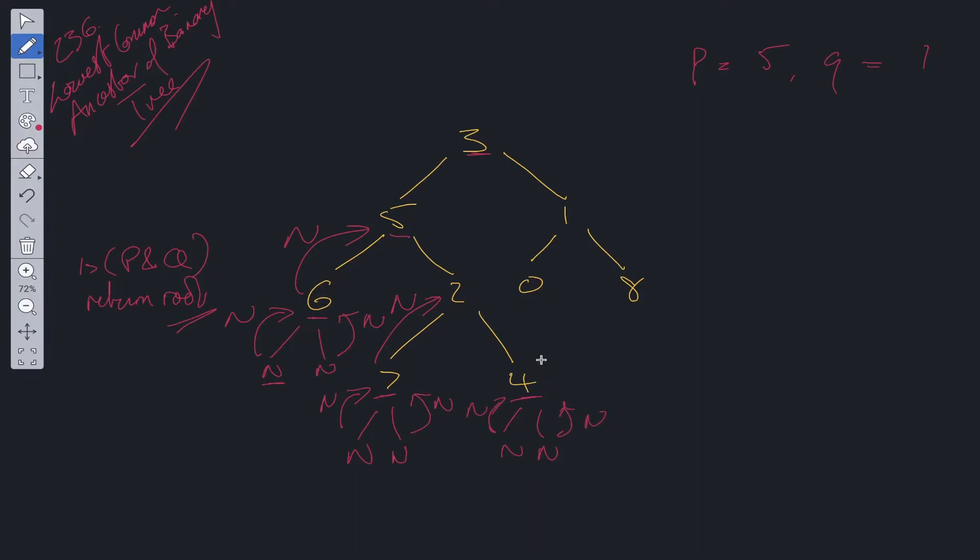Then we check: is 4 equal to P or Q? No, it's not. So we return null back up to 2 as well. At 2, we check is P and Q present? No, neither of them are. So we check if 2 is equal to P or Q. It isn't, so we return up to 5, null.